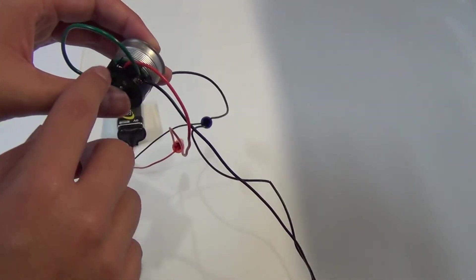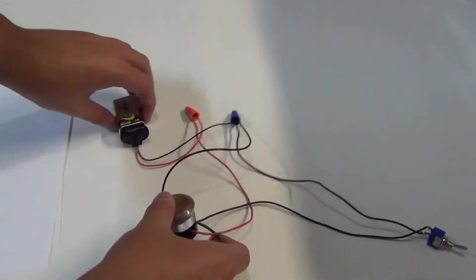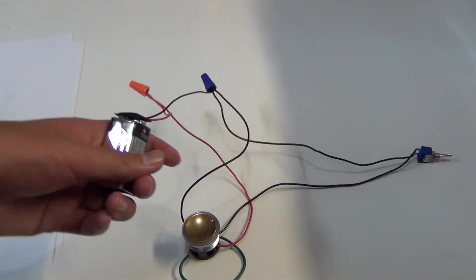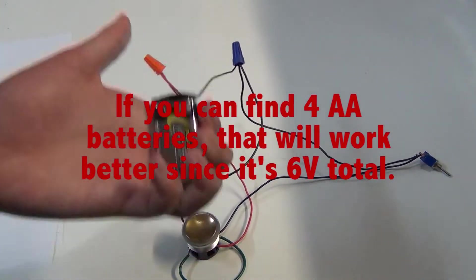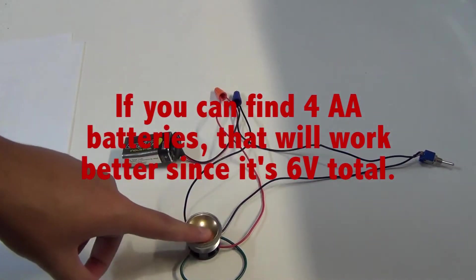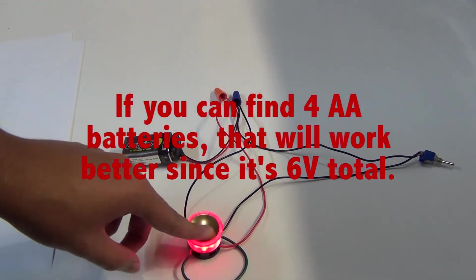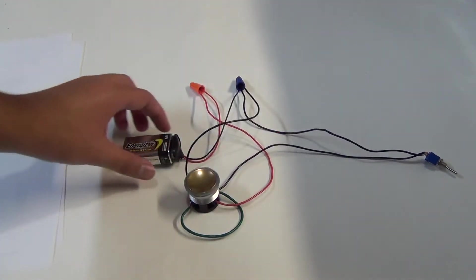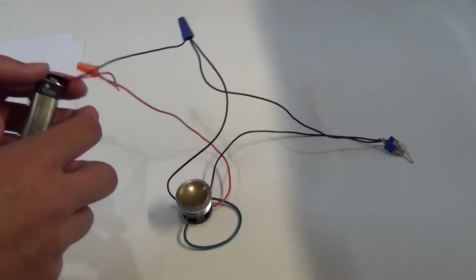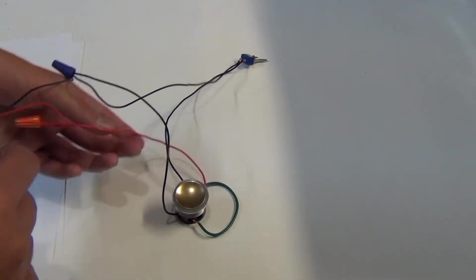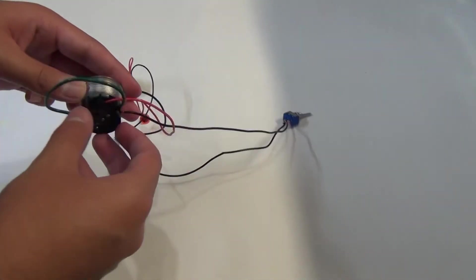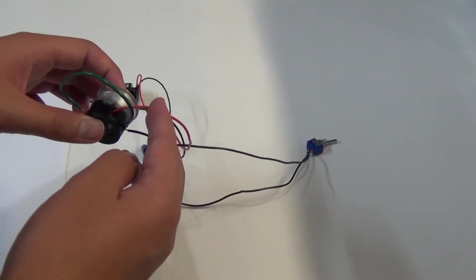So to wire it up, you're going to first want a battery. We're going to take a 9V battery. I know this is rated at 6V, but 9V works just fine for a short amount of time. You're going to want to put the positive terminal all the way over here to the positive terminal on the button.